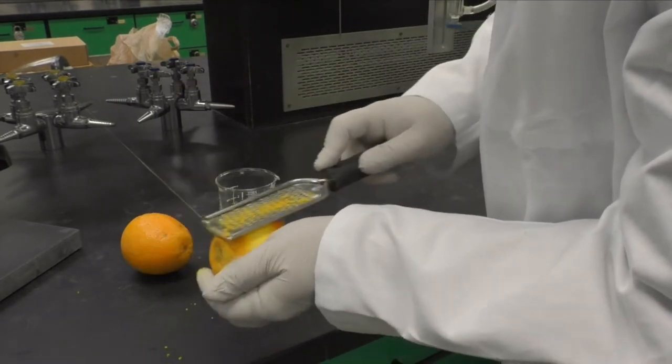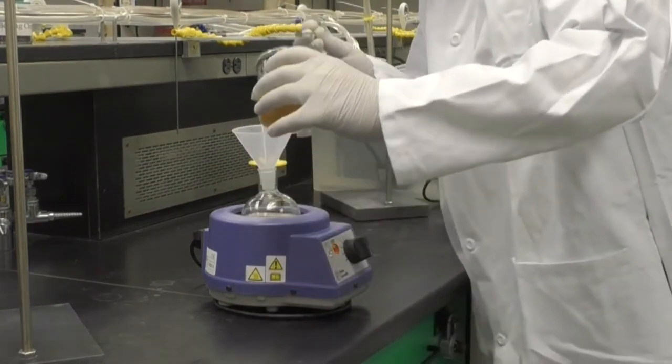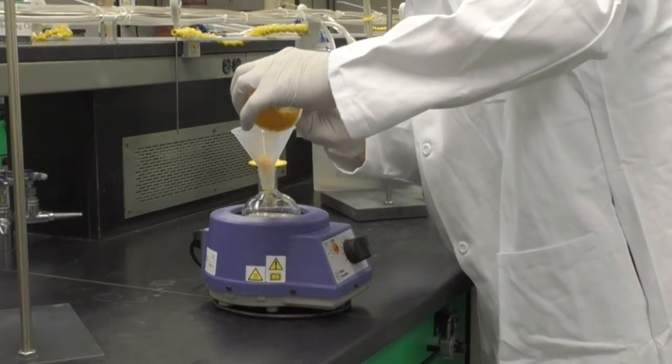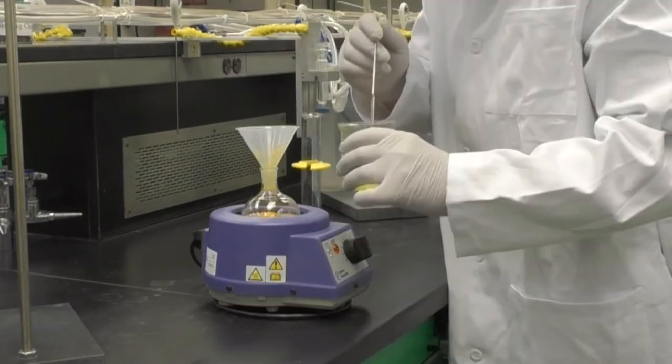With the flask in the heating mantle, use the powder funnel to transfer the zest into the round bottom flask. Then add a few boiling chips and 125 milliliters of water.